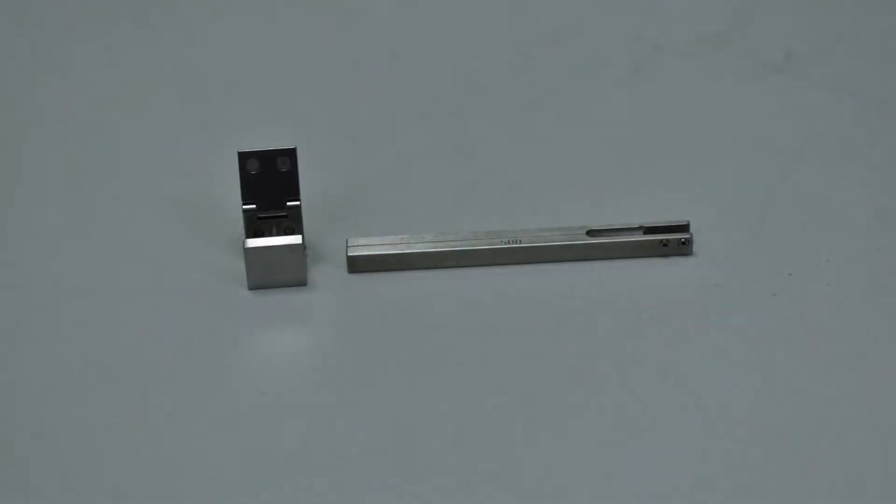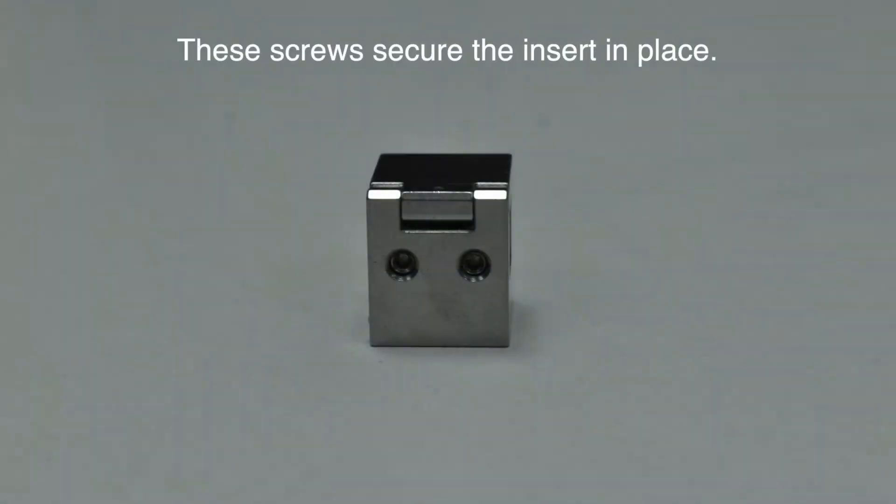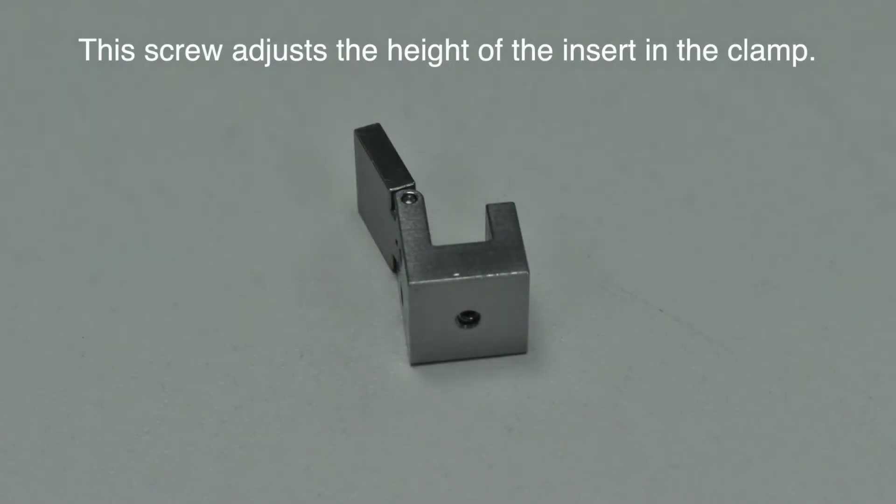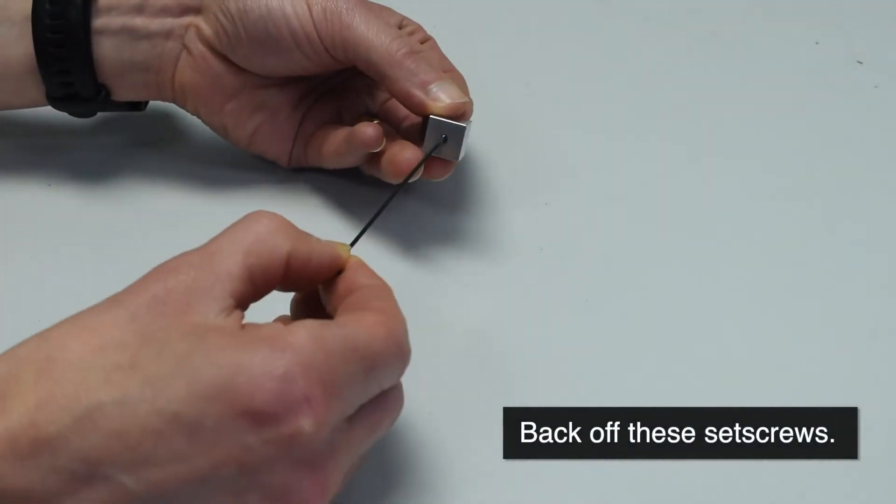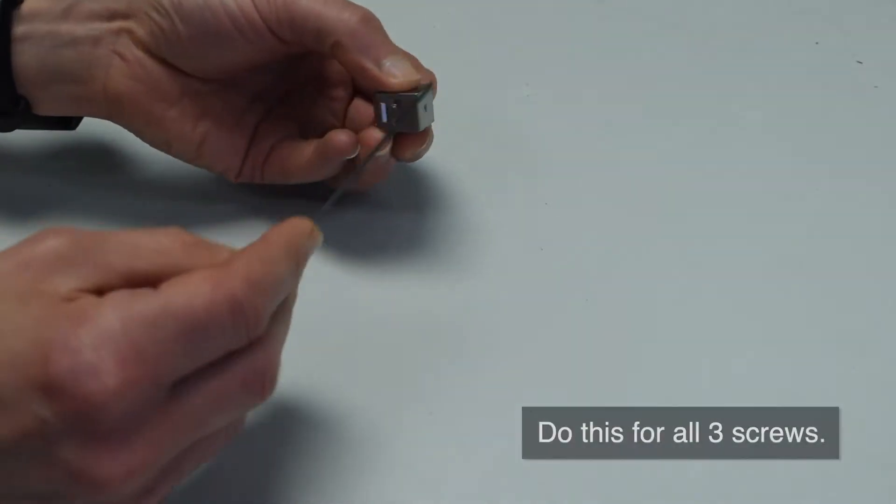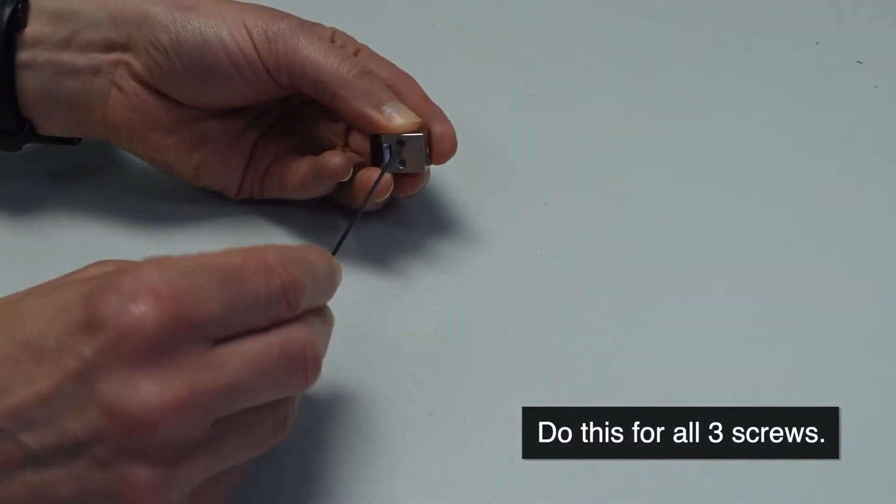The insert is positioned in the transfer clamp using three screws. Two screws on the back secure the insert in place. A screw on the bottom of the transfer clamp adjusts the height of the insert in the clamp. First turn these screws anti-clockwise so that they are backed off and not protruding from the metalwork on the inside of the clamp.